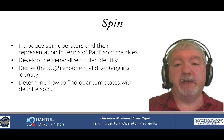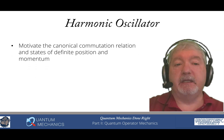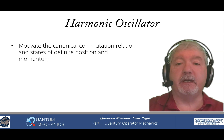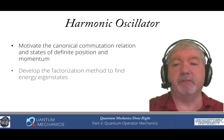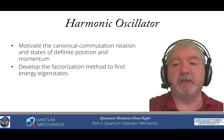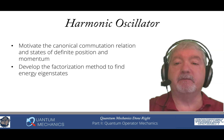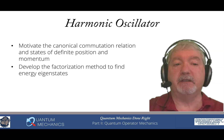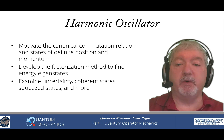We then determine how to find quantum states that have definite spin in any particular direction. Then in the next chapter, we move on to the harmonic oscillator. That requires us to get the canonical commutation relation and work with states that have definite position and momentum. We develop the factorization method to find energy eigenstates, and those who've taken quantum mechanics will be surprised about a number of the subtleties of the factorization method. We examine uncertainty, coherent states, squeeze states, and a lot more.